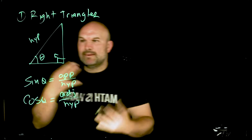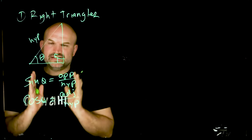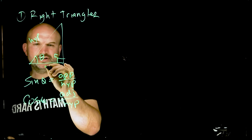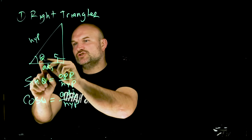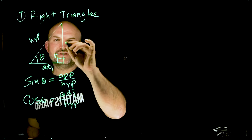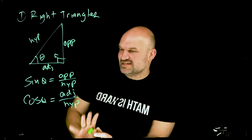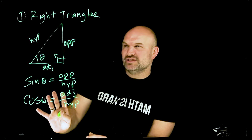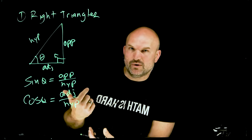We need to remember where opposite and adjacent come from. The adjacent side is always between your theta and your 90-degree angle. The opposite side is always directly across from your angle. These are the first definitions we focus on with sine and cosine. If we're given values for these triangles, we can use these trigonometric functions to solve.